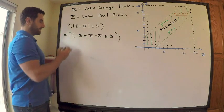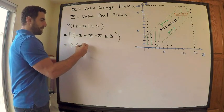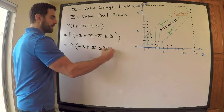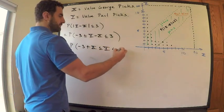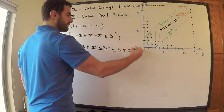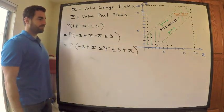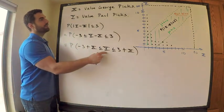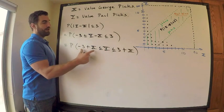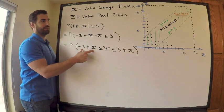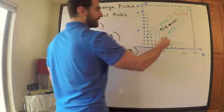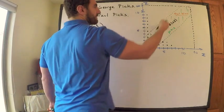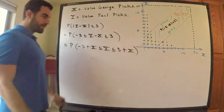Now just add X to both sides. This is equal to the probability that negative 3 plus X is less than or equal to Y is less than or equal to 3 plus X. Alright. Hopefully you can see now that's exactly what I want. Y needs to be greater than the line negative 3 plus X. Here's negative 3 plus X right here. It needs to be greater than that, above it, and it needs to be below the line 3 plus X. Here's 3 plus X. So it needs to be in this region. That's what I'm looking for.